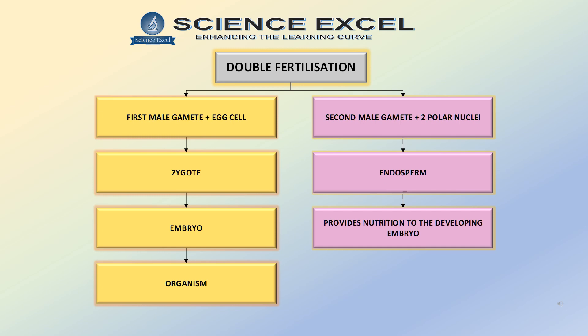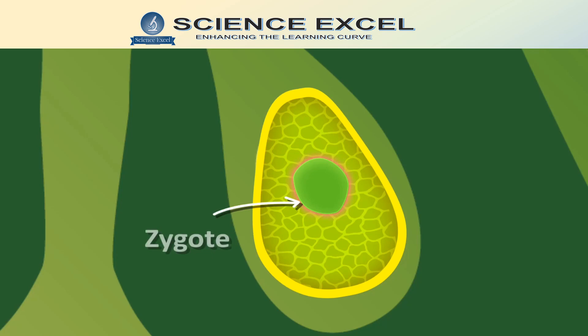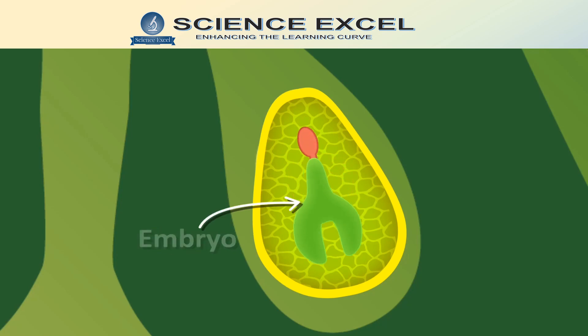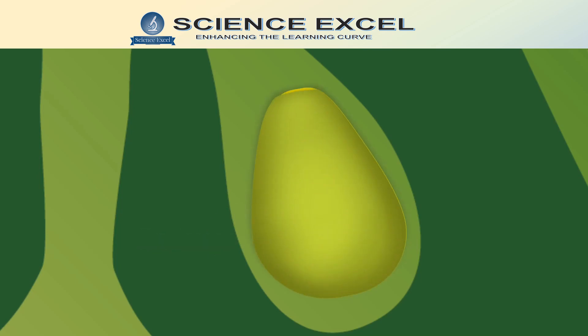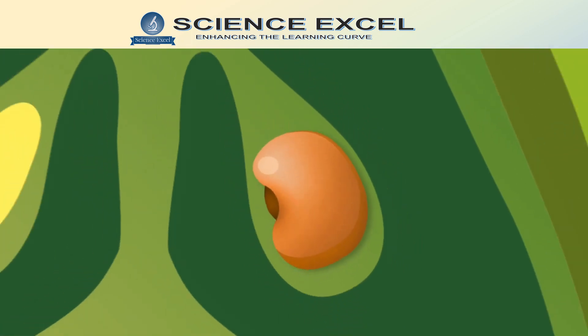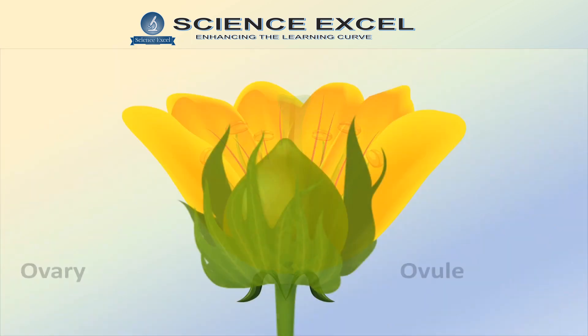Now let's explore what would happen if fertilization is successfully completed. Once the ovules have been fertilized, it now contains a zygote which divides by mitosis to form an embryo plant. The ovule develops a tough coat and changes to a seed.